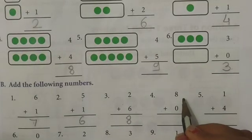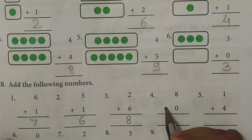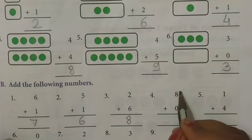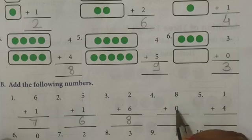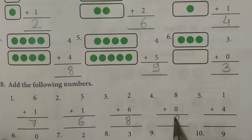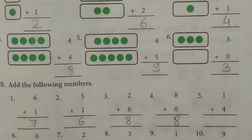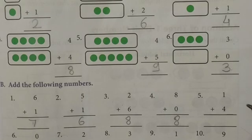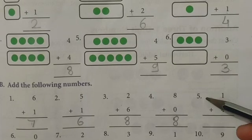Now see here: eight plus zero. Whatever number you have, if you add zero to it, the answer is the same number — eight. Okay, next.